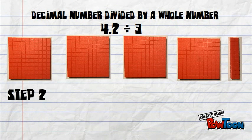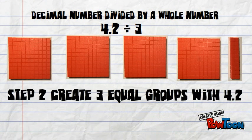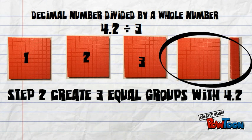Now that we've represented 4 and 2 tenths, we must create 3 equal groups with 4 and 2 tenths. So we have 1, 2, 3, and here we see that we have a problem.